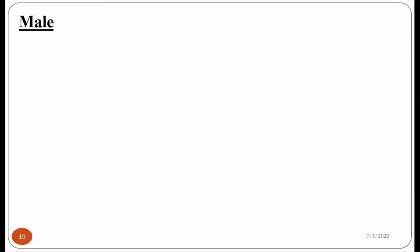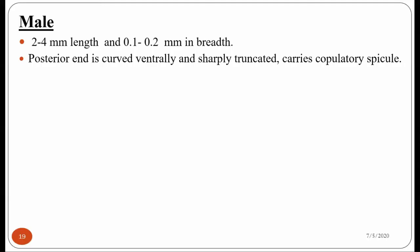The adult male worm of Enterobius vermicularis is comparatively smaller than its female counterpart. The male worm measures 2 to 4 millimeters in length and 0.1 to 0.2 millimeters in breadth. Its posterior end is ventrally coiled and sharply truncated. At the posterior end of the male worm, there are copulatory spicules which help during mating with the adult female worms. After mating, the male worm dies immediately after fertilizing the female.